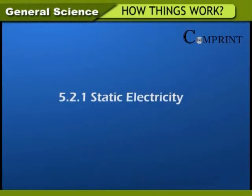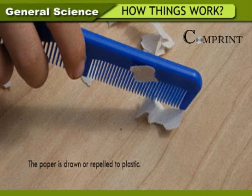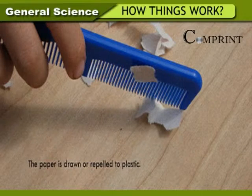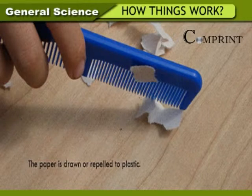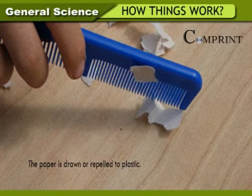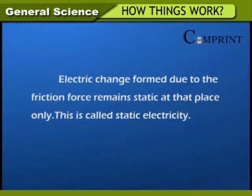Static electricity. Activity: Comb dry hair many times and bring the comb near pieces of paper. Take a glass slab, rub it with a woolen cloth, and bring it near pieces of paper. Observe that pieces of paper are attracted by both the comb and the glass slab. This attraction is because of the friction caused by rubbing. The electric charge formed due to friction remains static at that place only. This is called static electricity.